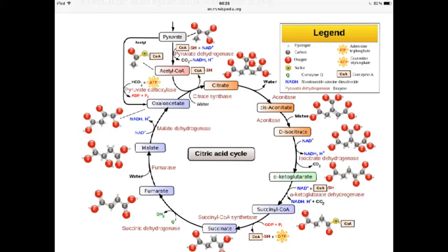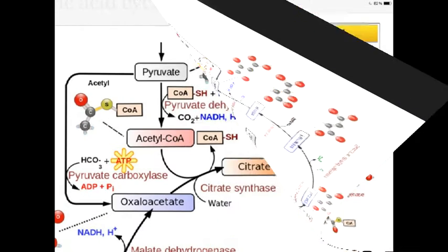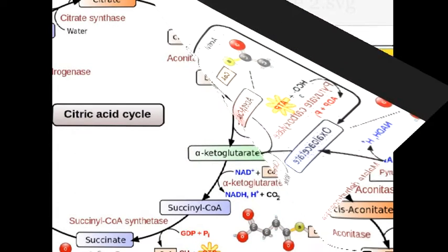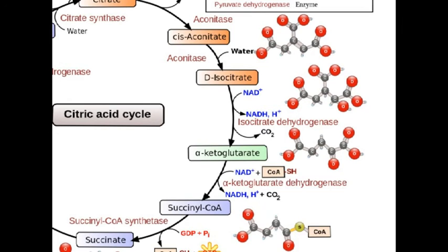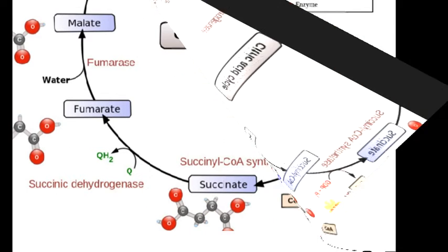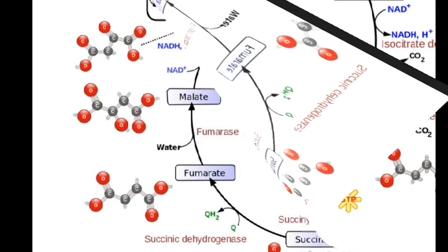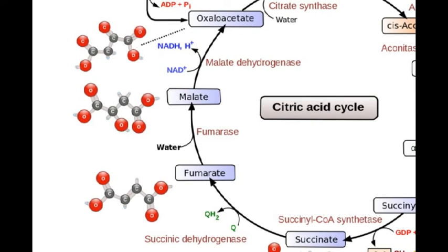We won't go into all the details of the citric acid cycle here, but here are the main features. Its main function is to allow hydrogen ions to move to the intermembrane space. It does this partly by reducing NAD to NADH, but also by producing succinate. Along the way some water is taken in and given out, and some oxygen is taken in. If the oxygen supply failed, the citric acid cycle would stop.